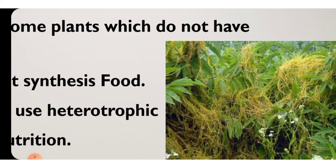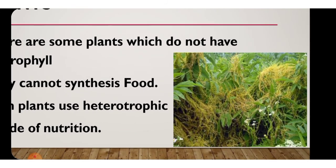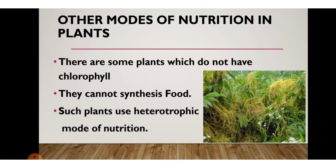One example is Cuscuta, also called Amarbel in Hindi — a climber plant that does not have chlorophyll. It takes ready-made food from the host plant on which it climbs. This Cuscuta is called a parasite because it sucks nutrients from the host plant, just like a parasite.